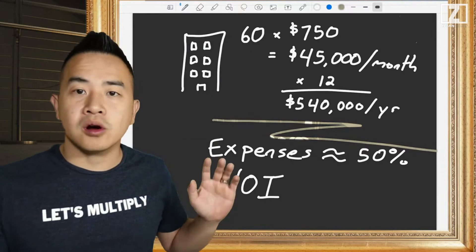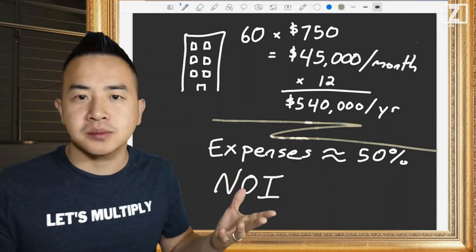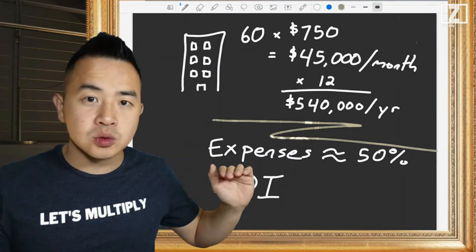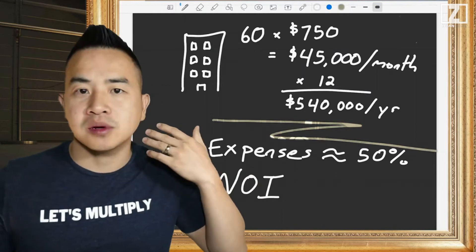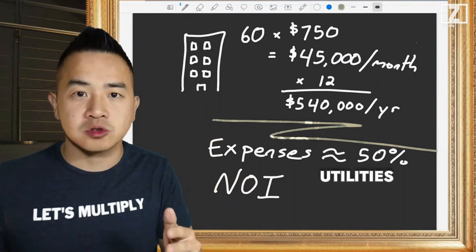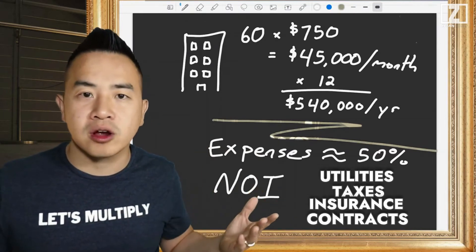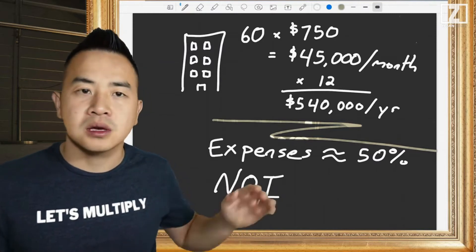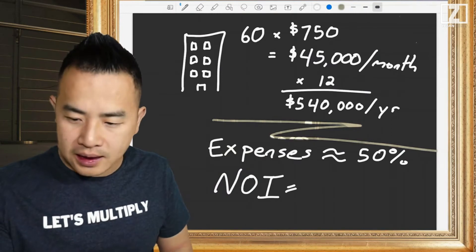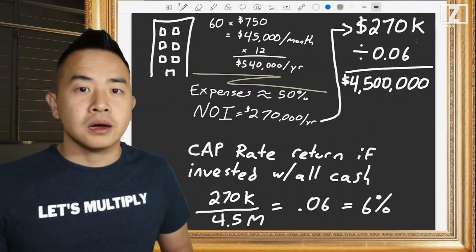In this case we are calling the expenses 50% — that's a rough approximation. When you're actually doing an apartment building analysis, you'll be doing actual expenses: subtracting how much you spend in utilities like water, electric, and gas, your taxes, your insurance, and contracts like snow removal and trash removal. At 50% expenses, your NOI is $270,000 per year.